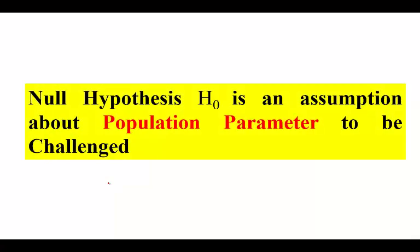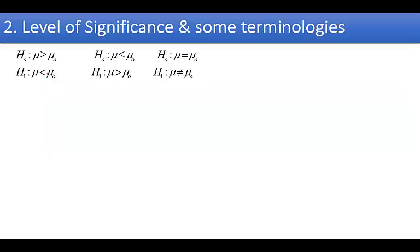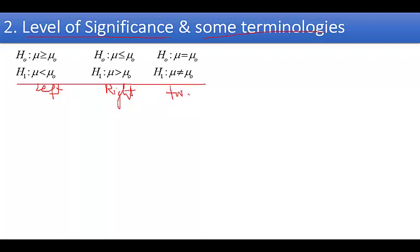The null hypothesis is an assumption about the population parameter to be challenged. In the next slide I will explain the concept of level of significance alpha and other important terminologies. There are three types of hypothesis: left tail test, right tail test, and two tail test. Mu-naught may be any number.